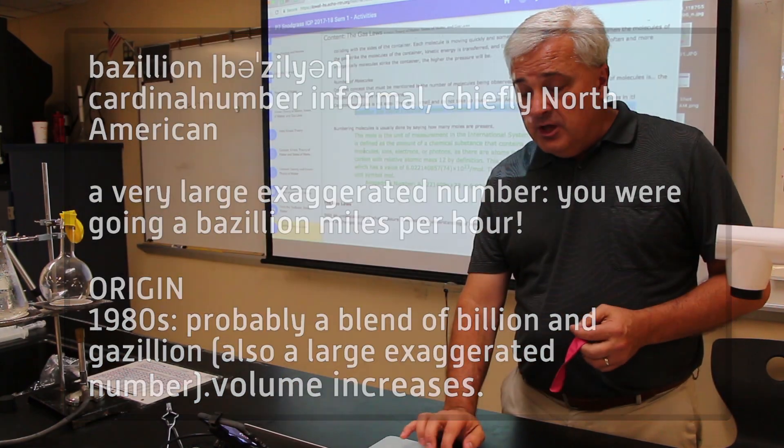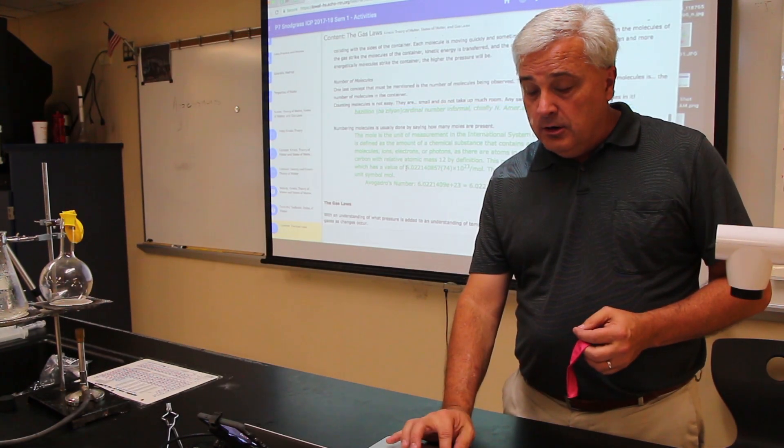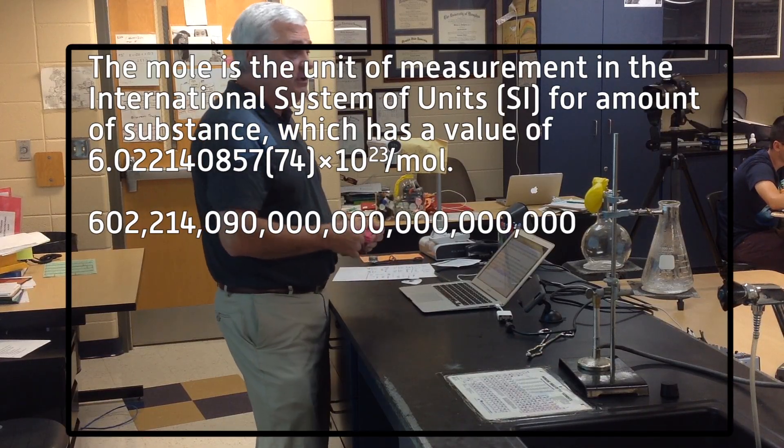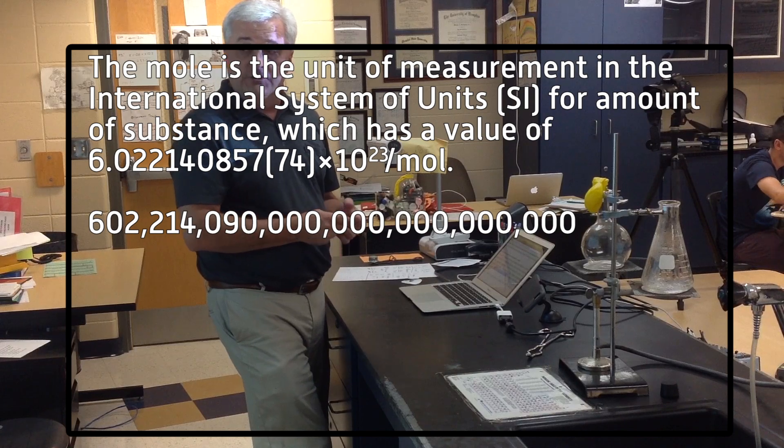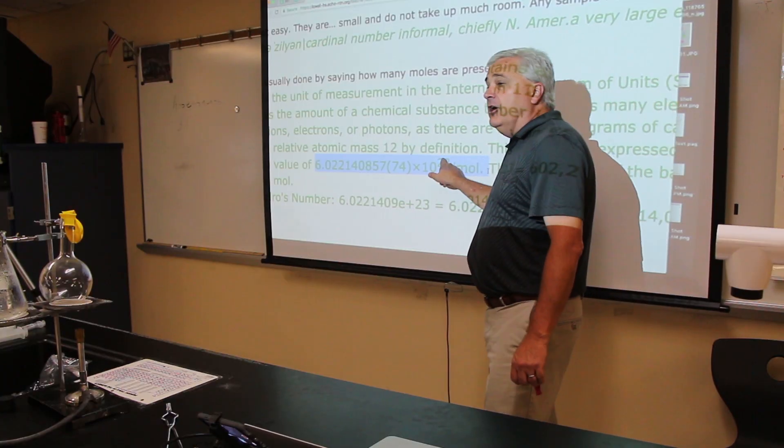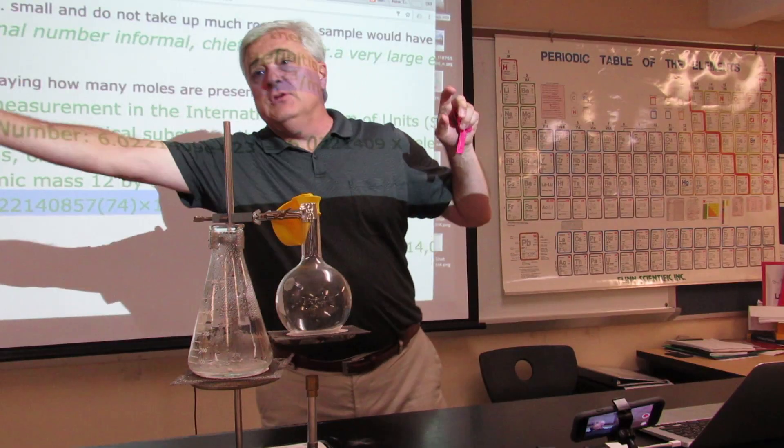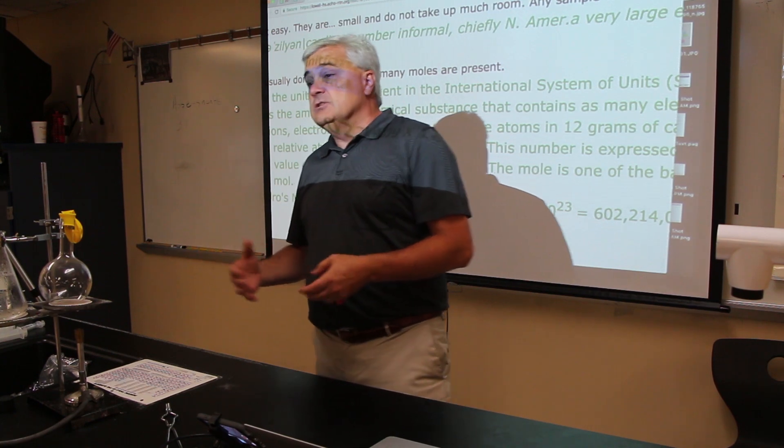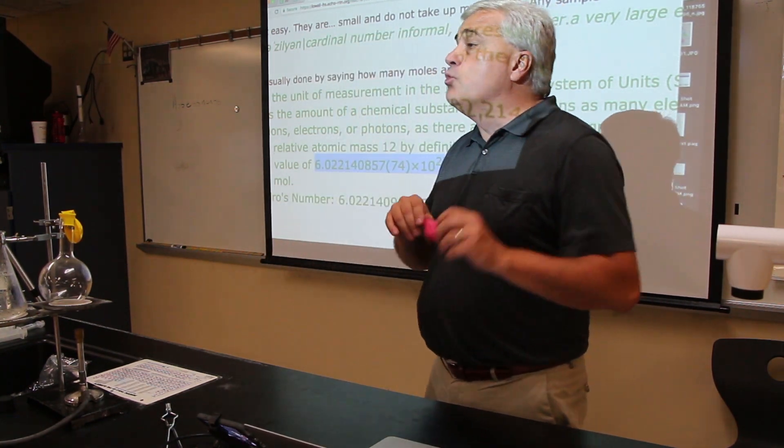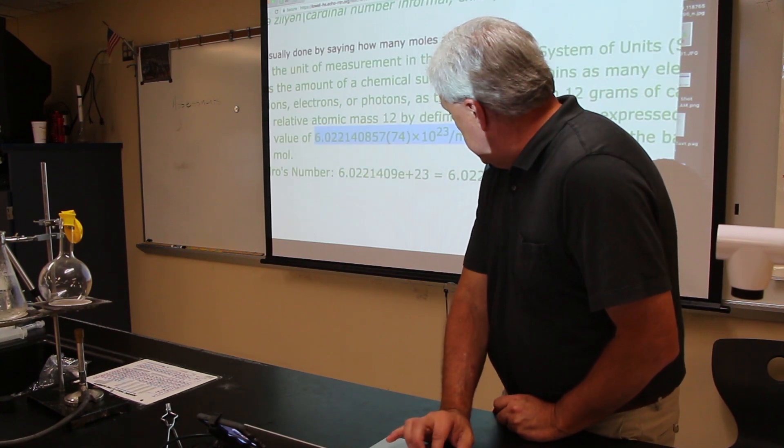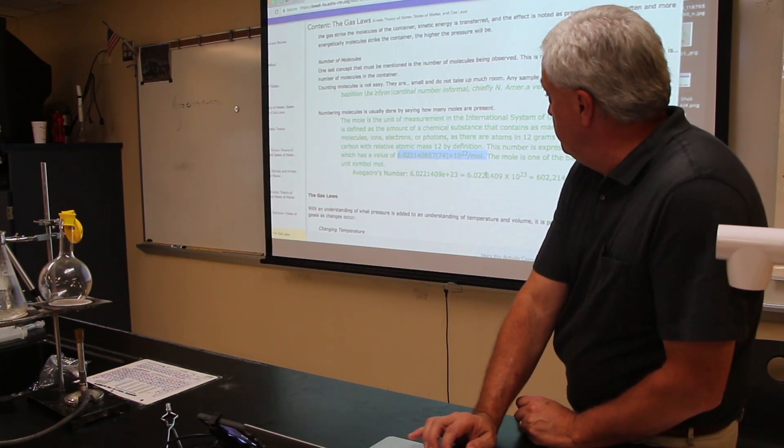The actual number of molecules in a mole is 6.022140857 times 10 to the 23rd. That means a 1 with 23 zeros. Whoa. That's a lot of zeros. So 10 to the 23rd is a really, really big number.